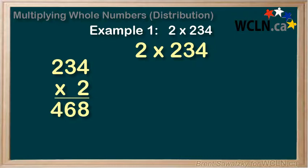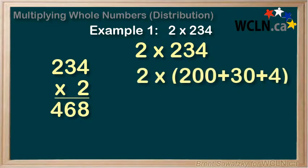For the distribution method, we'll break up the 234 like this: 200 plus 30 plus 4. The 2 was in the 100 spot, so it represents 200. The 3 was in the 10 spot, so it represents 30. And the 4 was in the 1 spot, so it's just 4.